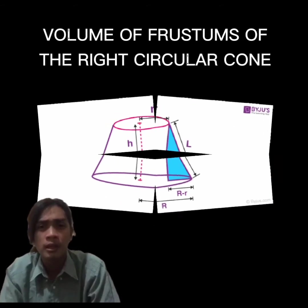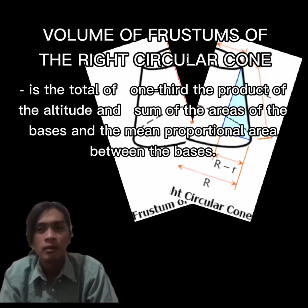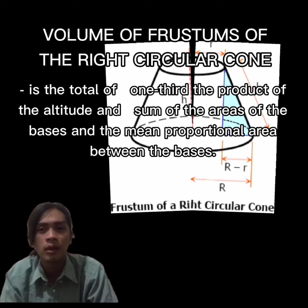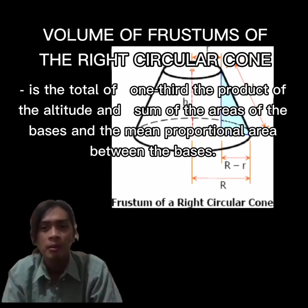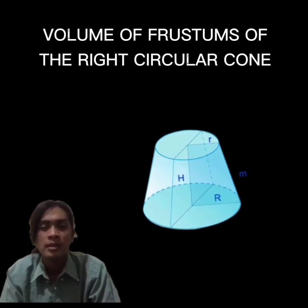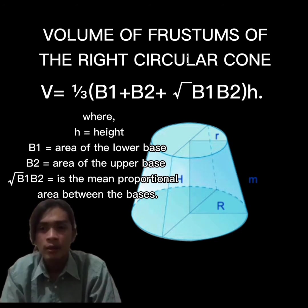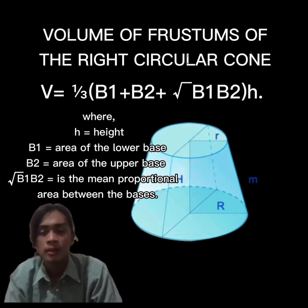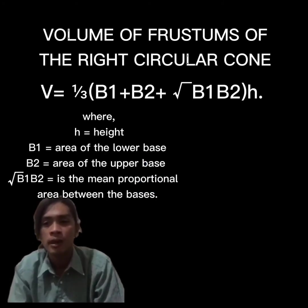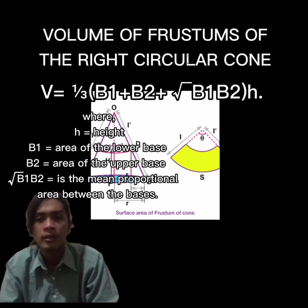The volume of frustums of a right circular cone is one-third the product of the altitude and the sum of the areas of the bases and the mean proportional area between the bases. The formula is: V = (1/3) × h × (B₁ + B₂ + √(B₁ × B₂)), where h is the height, B₁ is the area of the lower base, B₂ is the area of the upper base, and √(B₁ × B₂) is the mean proportional area.